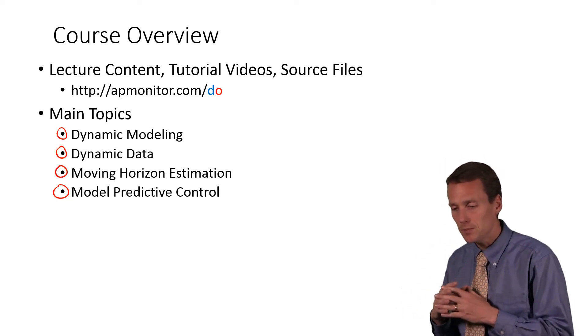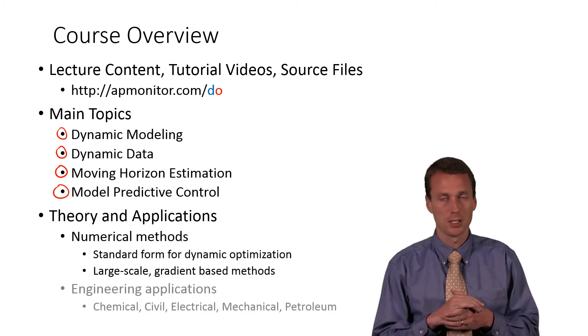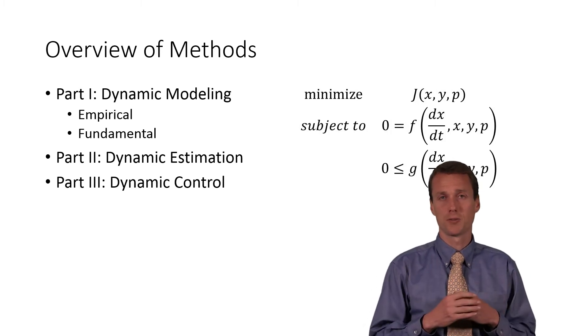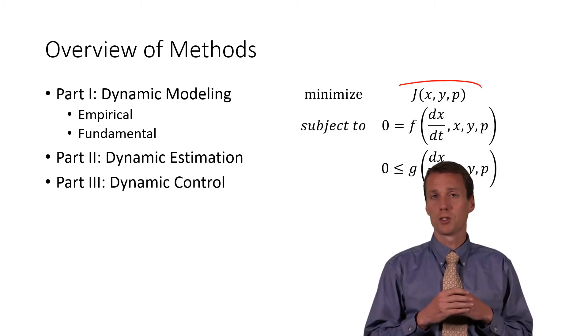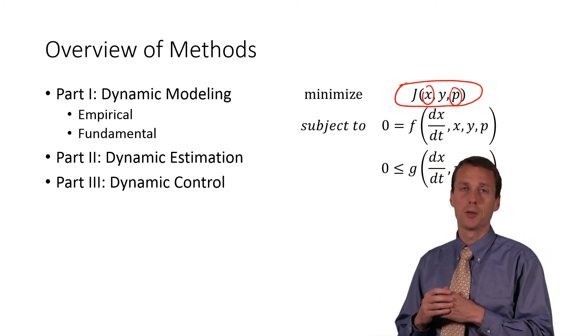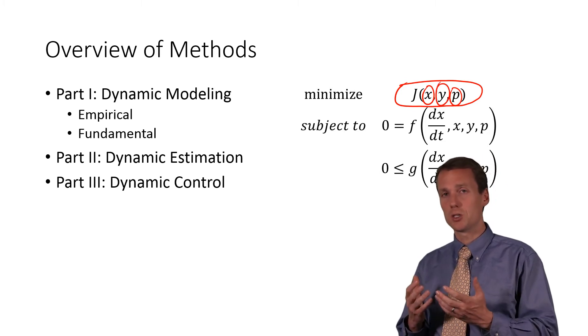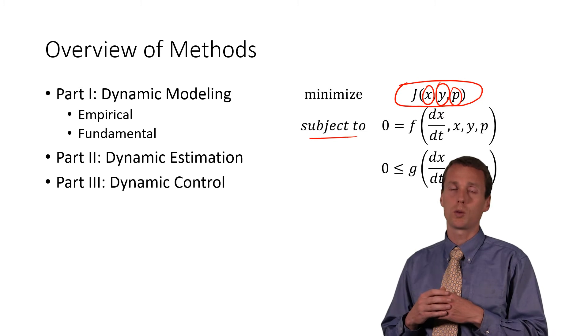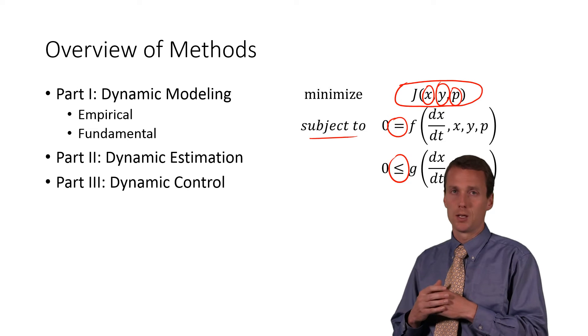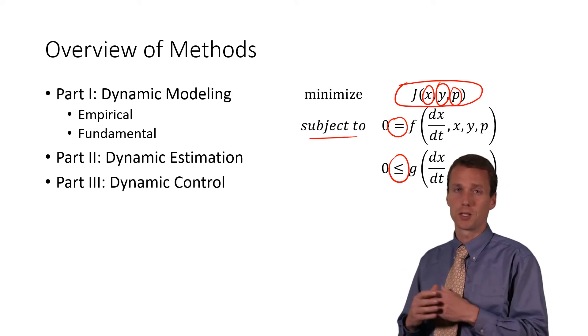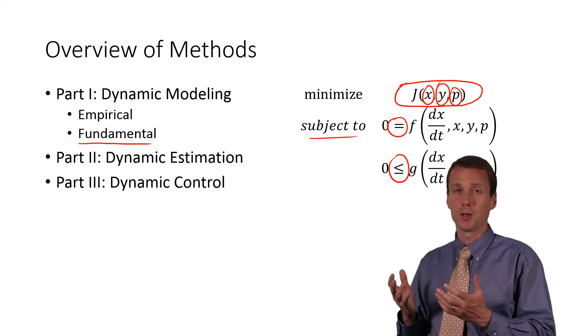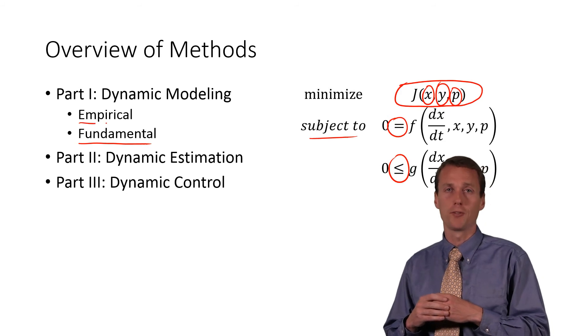Let's talk about the framework that we're going to be using here. The framework is solving this problem where we're trying to minimize an objective function with certain variables such as inputs U or states X or outputs Y. We're going to be subject to certain constraints, either equality or inequality constraints that are going to constrain the objective function. These might represent fundamental models such as mass or energy balances, force balances, things that we know from fundamentals or empirical relationships that we've derived from data.